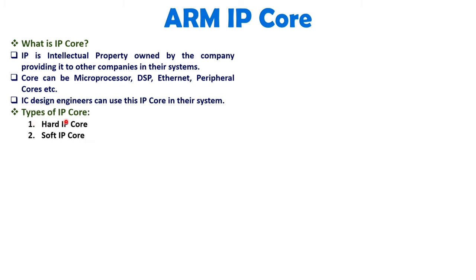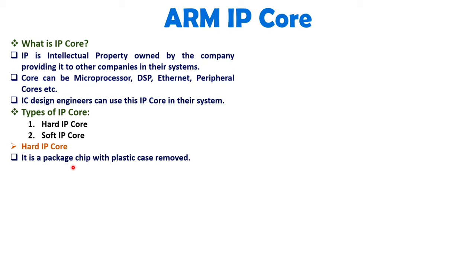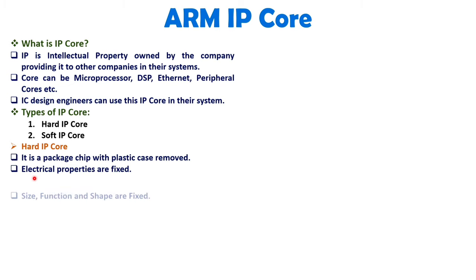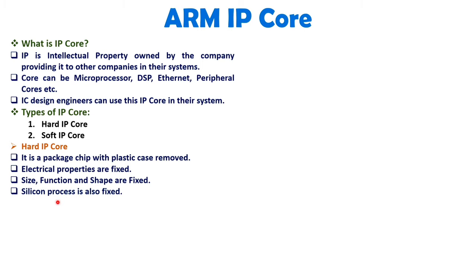There are two types of IP core: one is hard IP core and the second is soft IP core. Hard IP core is a package chip with the plastic case removed — it is a physical package chip provided by the company. The electrical properties of that package chip are fixed, so you cannot change them. Electrical properties means how signaling is happening inside. Size, function, and shape are fixed. The silicon process is also fixed, so you will have to use the same silicon process for other peripheral interfaces.